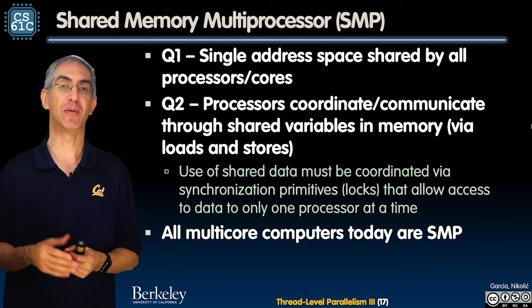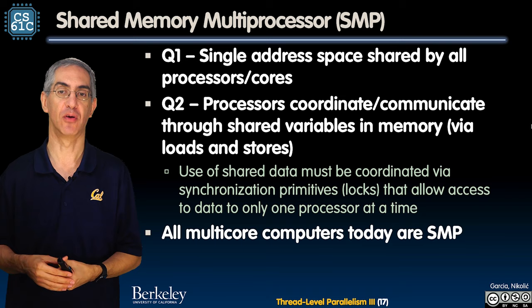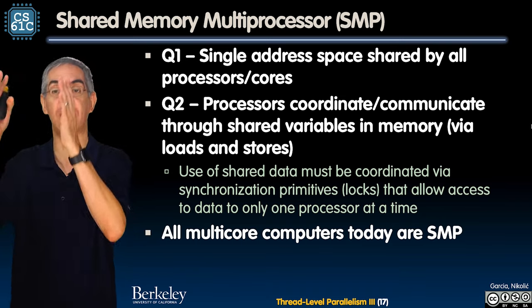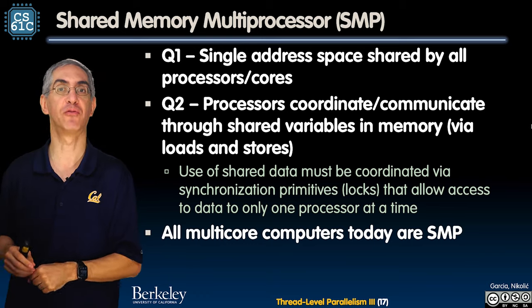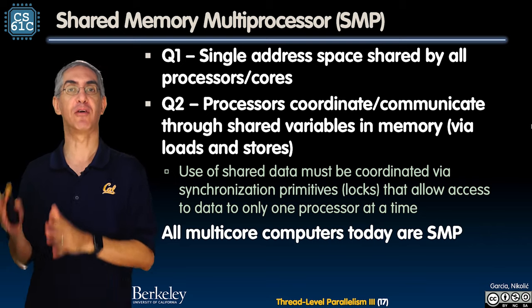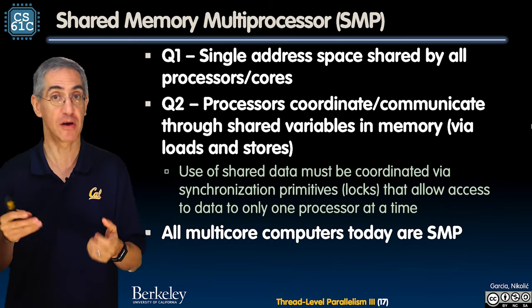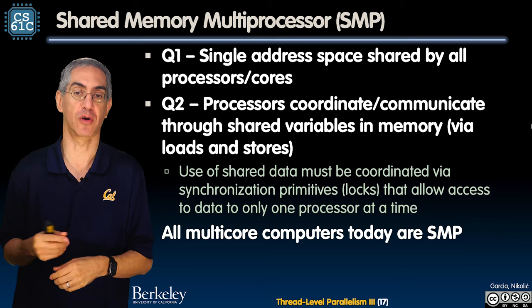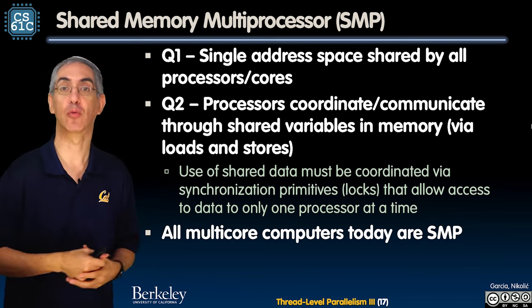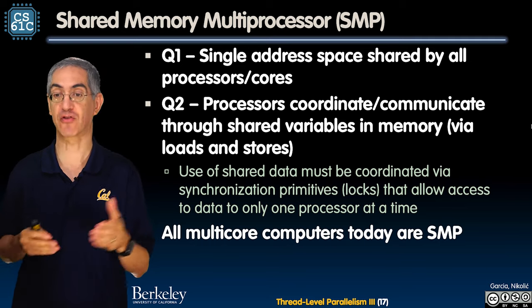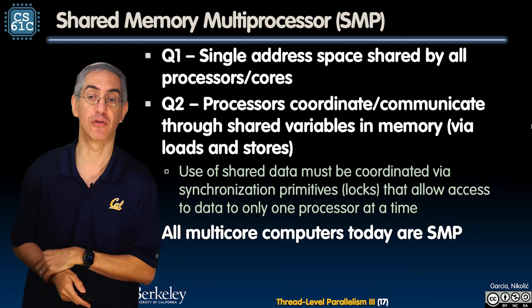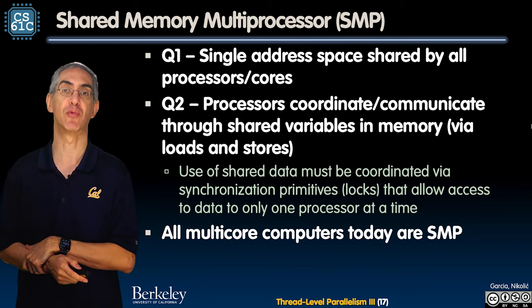In SMP, or shared memory multi-processors, we have a shared address space. Memory from zero to four gibibytes is shared among all processors, and they communicate via shared variables in memory through loads and stores - that's the only way to communicate. You have to synchronize that somehow, and we talked about hardware synchronization or locks to make sure two processors don't both think they have write control. All multi-core computers now are SMP or shared memory multi-processors.